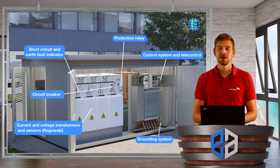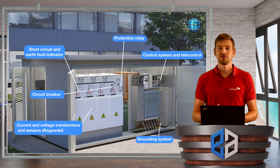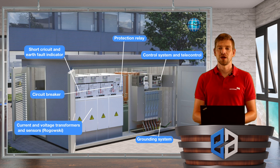All this data is interesting for the control center, so we have a control system connected to SCADA that brings the data up there. In addition, we have more and more electronics in this modern distribution switchgear, and therefore the grounding system is getting more important. If there is a thunderstorm nearby, the electronic components need to be protected.